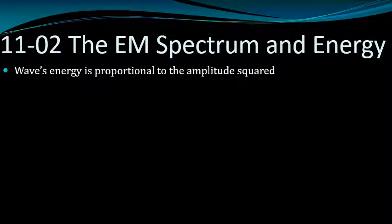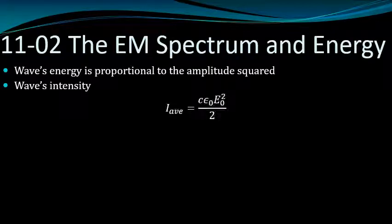A wave's energy is proportional to its amplitude squared. The wave's intensity—that's power divided by area—equals the speed of light times epsilon naught times the electric field squared, all over two. Or we can do it with the magnetic field.